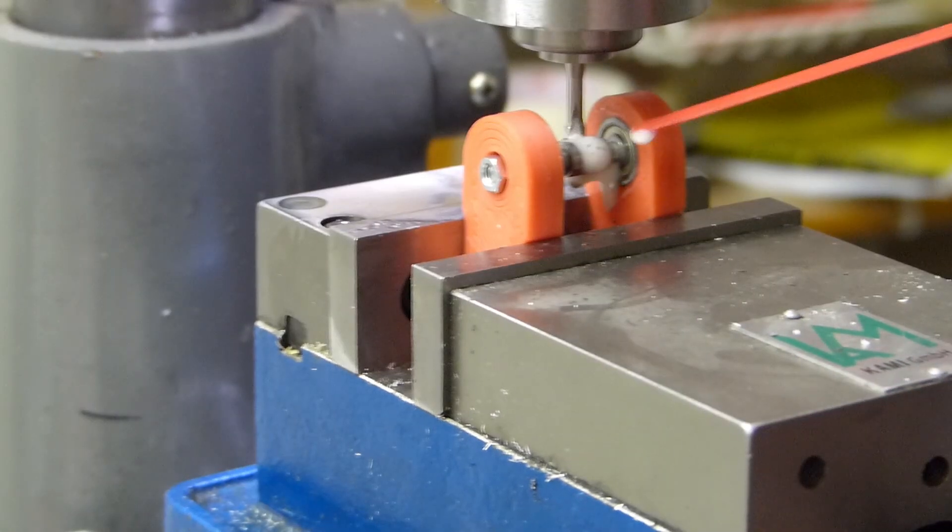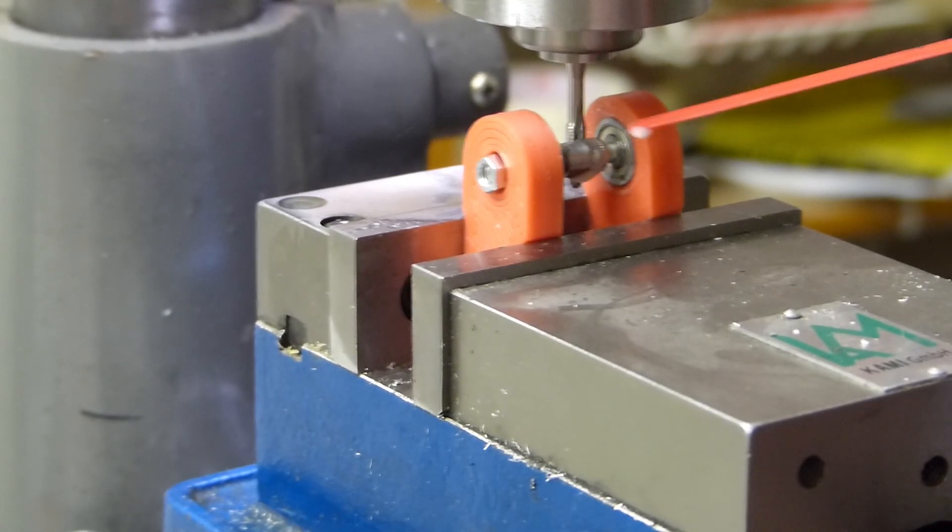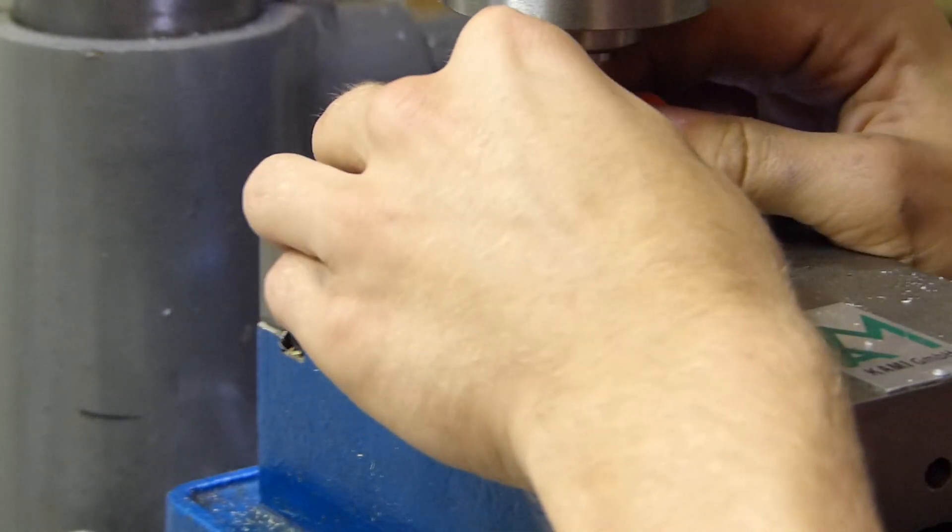So I had made a classic hobbed bolt before, and for that I had used a printed bearing holder, which worked pretty well. So I tried that again, but as it turns out these are sliding around in the vise pretty badly.